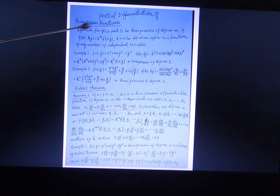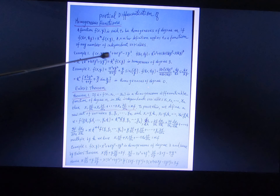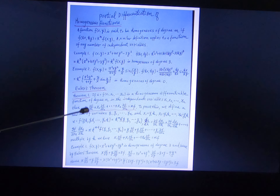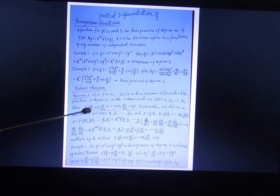We define a homogeneous function — these are the homogeneous definition. And these are Euler's theorem: x₁ times the partial derivative of f with respect to x₁ (summed) is equal to m·f.